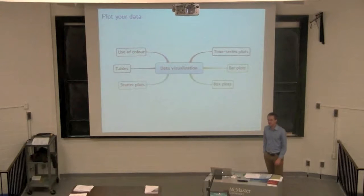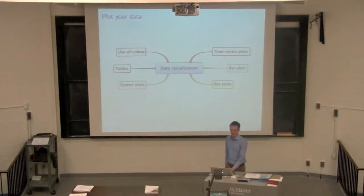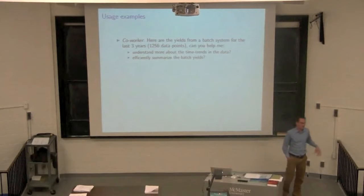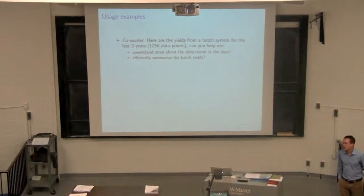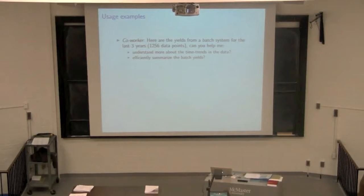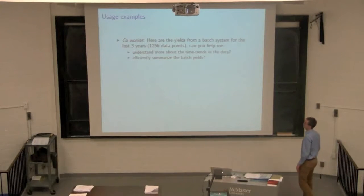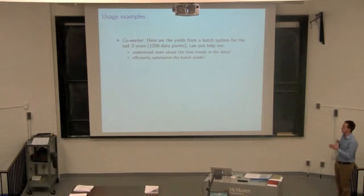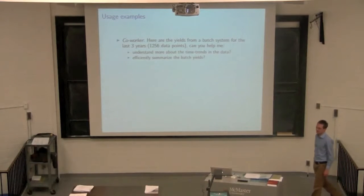This section is really just looking at the basics of launching in today's testing. The examples of where you might use the topics you're going to look at now: say your co-worker comes to you and mentions batch data, and at the end of the batch you take a yield — perhaps the yield of the substrate. You've got data going back three years, about 1,200 data points. You'd like to know how you can better understand that data by summarizing it and looking at any time-based trends. We'll look at the time series cost of doing that.